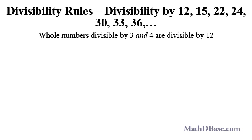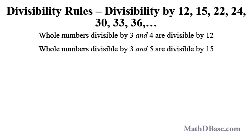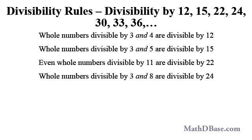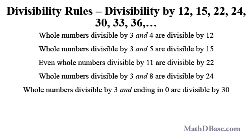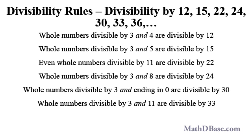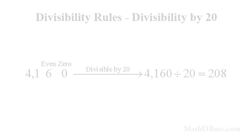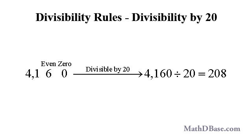If a whole number is divisible by 3 and 4, it is also divisible by 12. If divisible by 3 and 5, it is also divisible by 15. If even and divisible by 11, it is also divisible by 22. If divisible by 3 and 8, it is also divisible by 24. If divisible by 3 and ends in 0, it is divisible by 30. If divisible by 3 and 11, it is divisible by 33. If divisible by 4 and 9, it is divisible by 36. If the unit's digit is 0 and the tens digit is even, the number is divisible by 20.